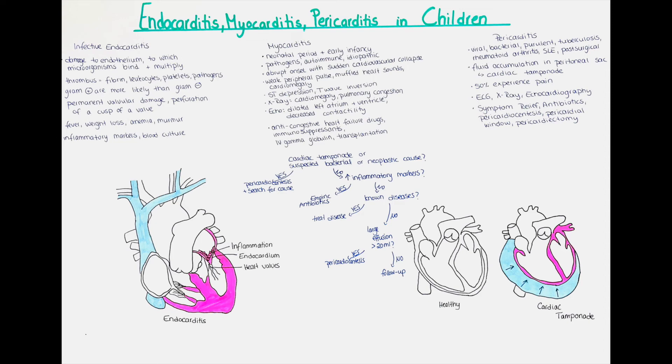To diagnose pericarditis, the anamnesis can be indicative if the patient suffers from systemic lupus erythematosus, a malignancy or uremia, or if the patient had a recent infection with for example Coxsackievirus B. A purulent pericarditis, where pus is formed, is often due to Haemophilus influenzae, Pneumococcus and Staphylococcus, so the vaccine status should also be checked.